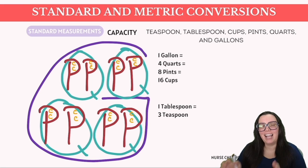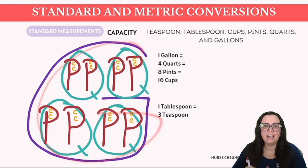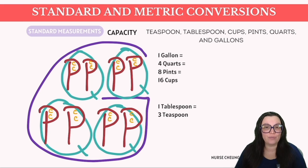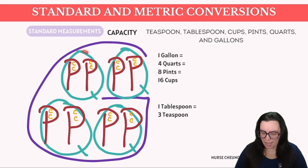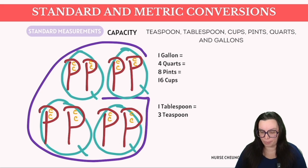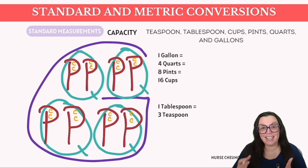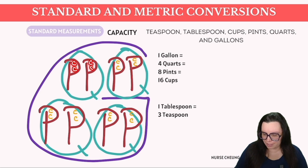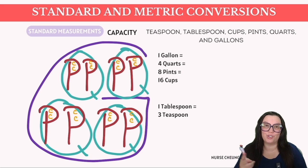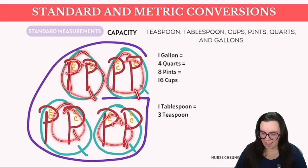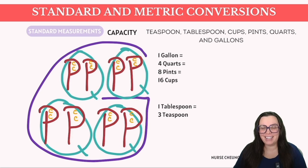Let's use a mnemonic to recall U.S. customary units for liquid volume or capacity — I call it 'Big G.' Draw a large capital G to symbolize a gallon. Inside, add four Q's for quarts — one gallon equals four quarts. Inside each Q, add two P's for pints — each quart has two pints. And inside each P, add two C's — each pint has two cups.